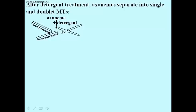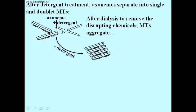Illustrated on these doublets are the dynein arms as well. If you dialyze this preparation to remove the detergents and chemicals which had disrupted the microtubule structure of the axoneme, the microtubules will re-aggregate — not into an axoneme, but into a sheet of doublets. The single microtubules don't have the capacity to associate with one another because they have nothing that allows them to bind.